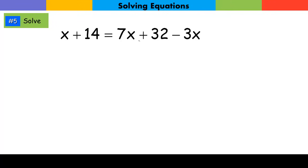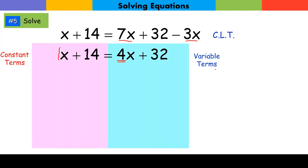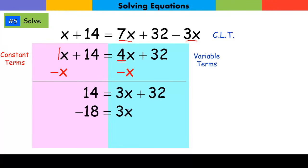Okay, again I'm going to clean this side up first by combining like terms. Now I'm going to pick this side to gather my variable terms because 4 is larger than 1 as a coefficient. So this side is going to be my variable side, this is going to be my constant side. I always attack the variables first, so I subtract x from both sides. Subtract 32 from both sides. Now I've got this. I can divide by 3 to get x equals negative 6.